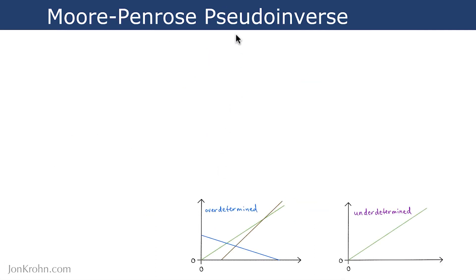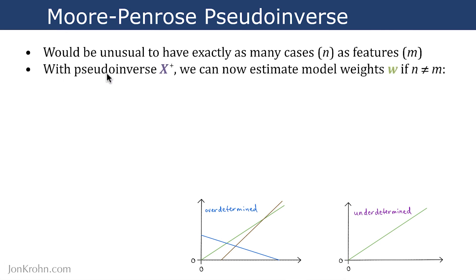This is where the Moore-Penrose pseudoinverse comes to the rescue. It would be unusual to have exactly as many cases n, in this case houses, as features or predictors of house price. With the pseudoinverse X plus, we can now estimate model weights even if n is not equal to m. We can solve for the unknowns using a variant of the equation where we had X inverse here, the matrix inverse of X. Now we put the pseudoinverse in there. We just plug that in and it allows us to solve for unknowns. This is great.